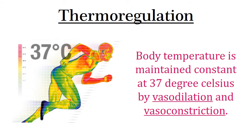The fifth function is thermoregulation. Body temperature is maintained constant at 37 degrees Celsius by vasodilation and vasoconstriction. Vasodilation is the widening of blood vessels, which increases blood flow in a region. Vasoconstriction is the narrowing of blood vessels, which slows down blood flow.